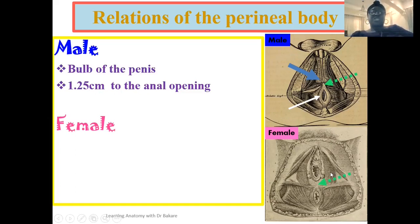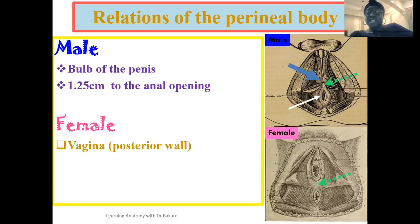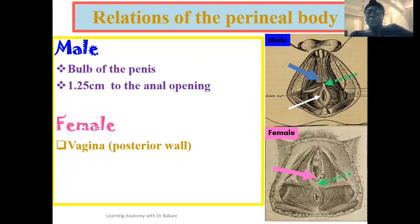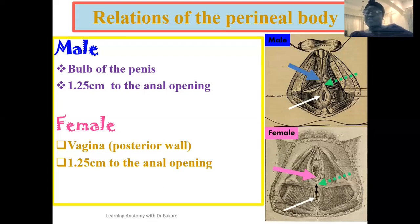In the female, the structure in the anterior part differs due to the reproductive system — you have the vaginal opening, arrowed in pink, anteriorly related to the perineal body. Posteriorly, the anal opening is also present in the female and is also about 1.25 cm from the perineal body. It is important to establish the structures related to the perineal body in both male and female.